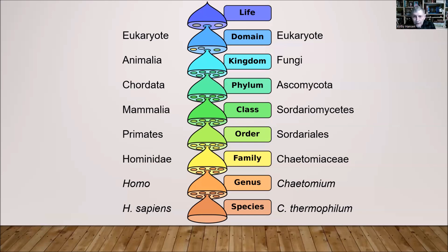On the left of this diagram is us — humans, or more properly from the bottom up: the species Homo sapiens, the genus Homo, the family Hominidae, order Primates, class Mammalia, phylum Chordata, and kingdom Animalia. The other organism on the right is a fungus, Chaetomium thermophilum. This fungus grows on dung or compost at temperatures ranging from about 120 to 145 degrees Fahrenheit. We humans have a nuclear pore complex, but even the lowly fungus Chaetomium thermophilum also has a nuclear pore complex, which is actually quite similar to our own.